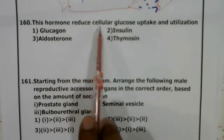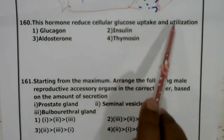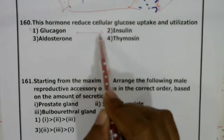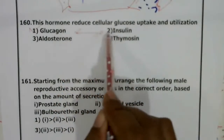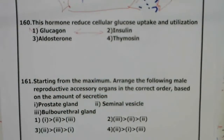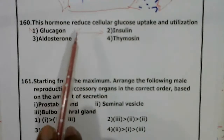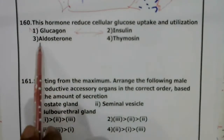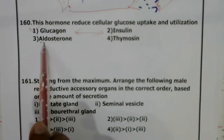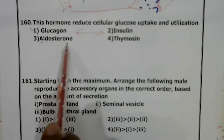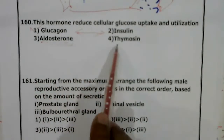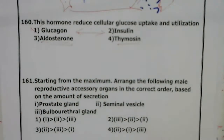Question 159: This hormone reduces cellular glucose uptake and utilization — glucagon, because it has the opposite function to insulin; they are antagonists. Aldosterone maintains salt concentration. Thymosin is released by the thymus and is useful for immunity.